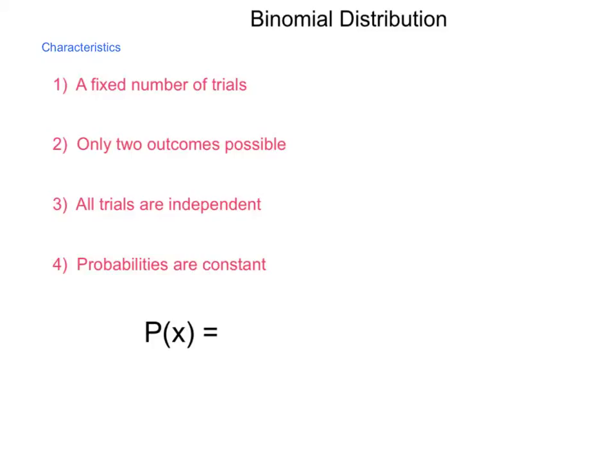So when we look at a binomial distribution, the way we calculate it is based on the following formula. P of X equals N choose X, times P to the X, times Q to the N minus X. N is the number of trials that we're going to perform. X is the number of successes that we are seeking for. P is our probability of success, and Q is the probability of failure.